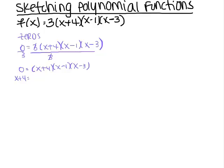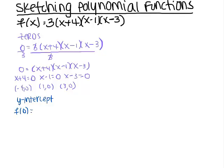So my zeros are negative 4, 1, and 3. Now, finding the y-intercept is probably a good idea as well. That's very easy to do — all I have to do is plug in 0 for x. f of 0 gives me 3 times 4 times negative 1 times negative 3, which means that my y-intercept is 0 comma 36.